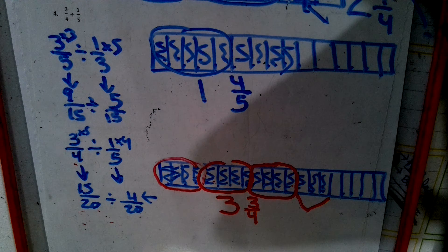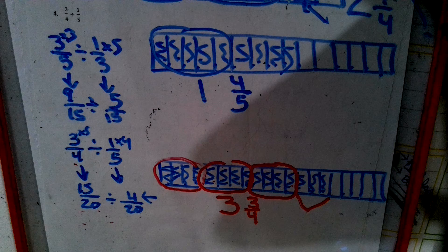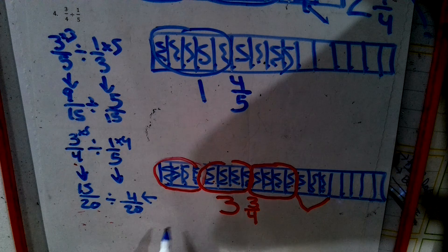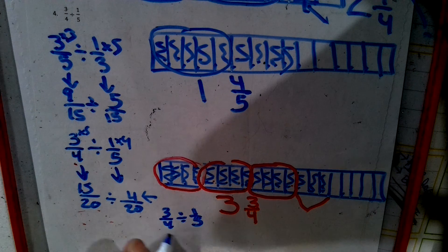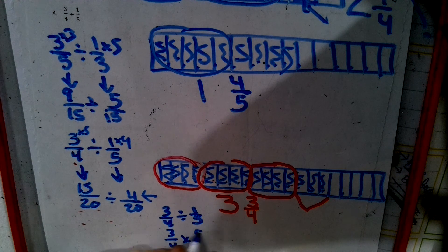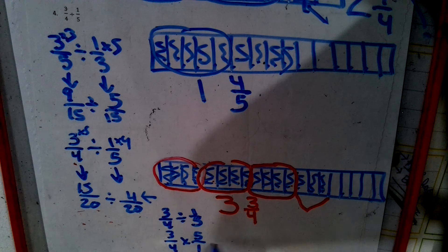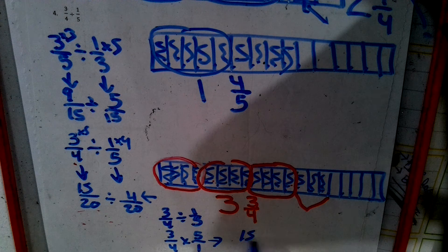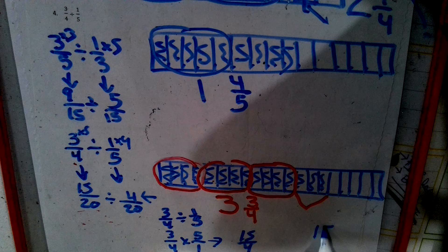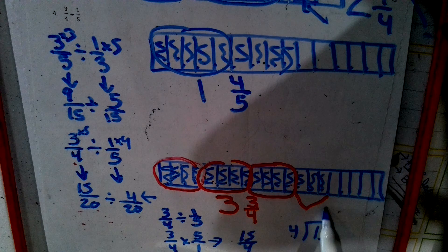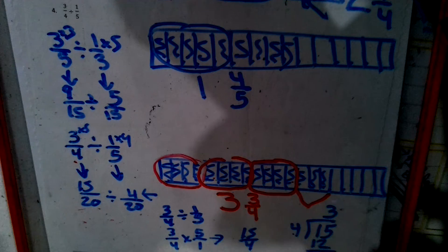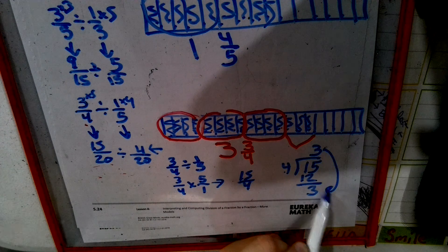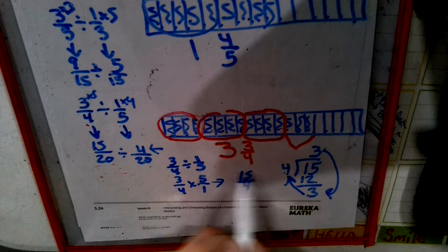So, if we were to drop, change, flip this, do a standard algorithm. We'd have three fourths divided by one fifth. Drop, change, flip, straight across, 15 fourths, divide it. Four goes into 15 three times to make 12. Three leftovers. Three and three fourths. Same answer.